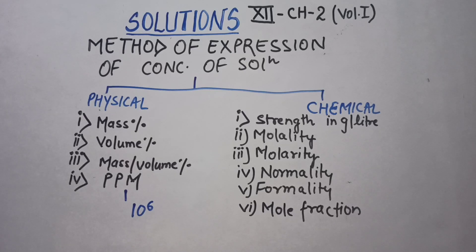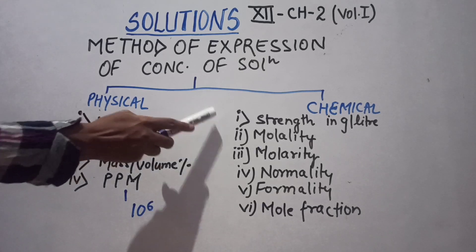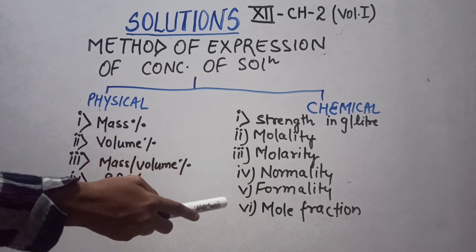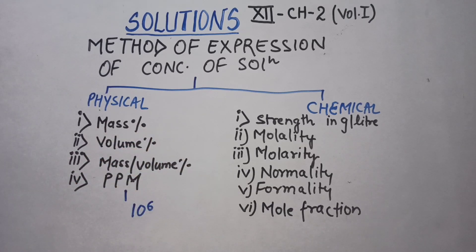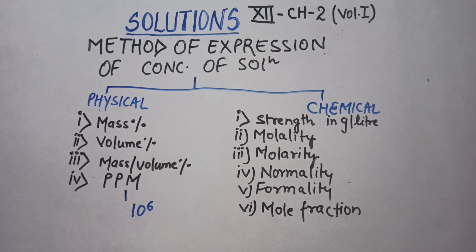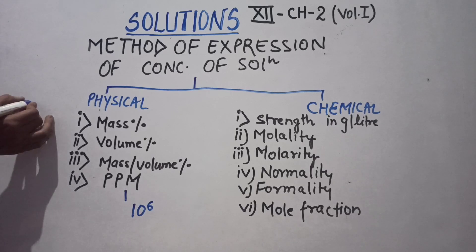Under the chemical basis, we have: strength in gram per liter, molality, molarity, normality, formality, and mole fraction. These can be further classified as temperature dependent or temperature independent. Wherever volume appears in the formula, that term is temperature dependent because volume generally changes with temperature.